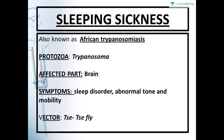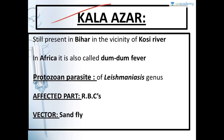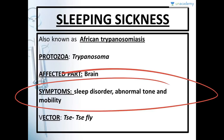Sleeping sickness is also known as African trypanosomiasis. The protozoa for sleeping sickness is Trypanosoma. The vector is the tsetse fly — do not confuse this with sandfly, which is for Kala Azar. In examinations, they try to confuse you by giving both tsetse fly and sandfly as options — remember which fly is responsible for which protozoan infection. The affected part is the brain, and the symptoms are sleep disorder, abnormal tone, and immobility.